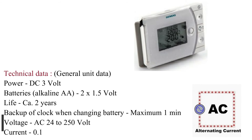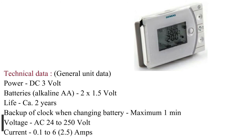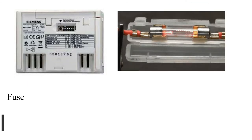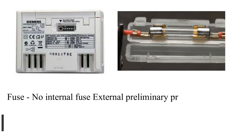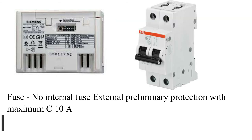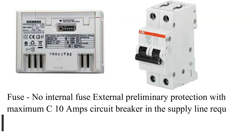Switching capacity of relay: voltage AC 24 to 250 volt, current 0.1 to 2.5 amps. Fuse: no internal fuse — external preliminary protection with maximum C10 amps circuit breaker in the supply line required under all circumstances.